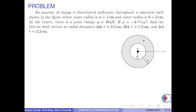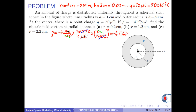An amount of charge is distributed uniformly throughout a spherical shell shown in the figure, where inner radius A is 1 cm and outer radius B is 2 cm. At the center, there is a point charge Q equal to 50 microcoulombs. If rho is negative 4 microcoulombs per cubic centimeter, find the electric field vectors at radial distances R equal to 0.2 cm, 1.2 cm, and 2.2 cm.